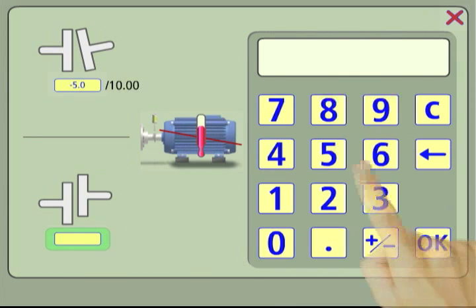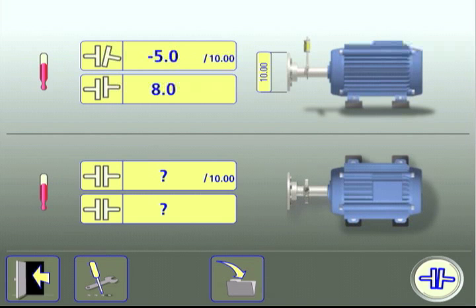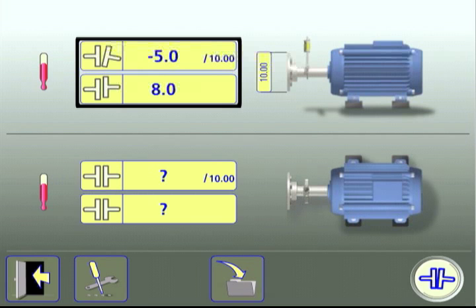Next enter an adjustment value for the offset growth of the movable machine in the vertical plane and touch OK. The angle and offset adjustments in the vertical plane now appear on the screen.